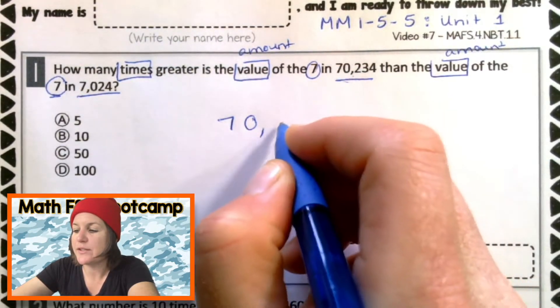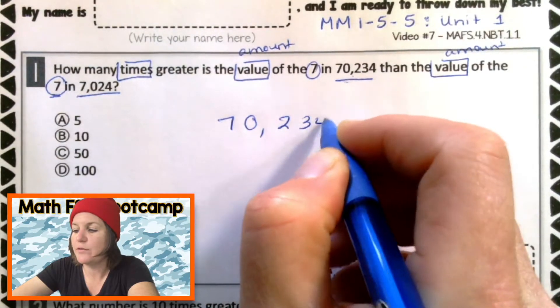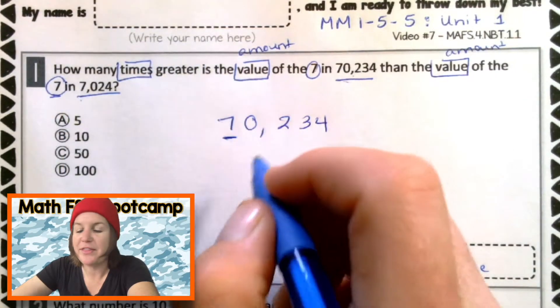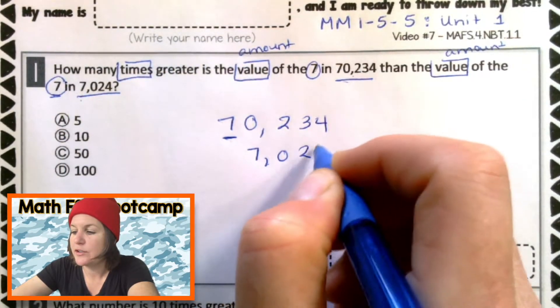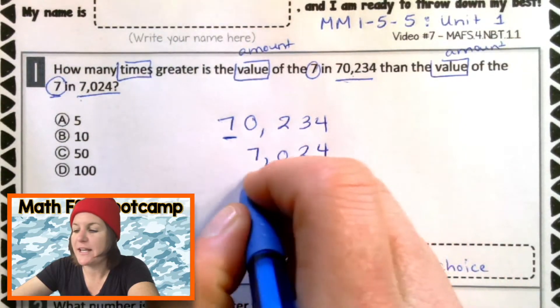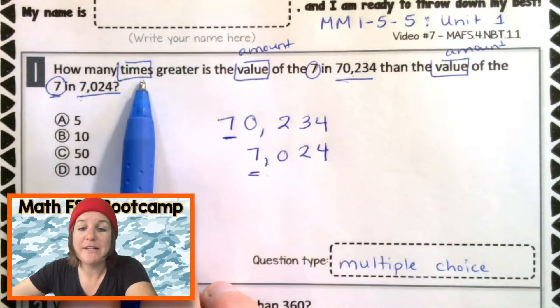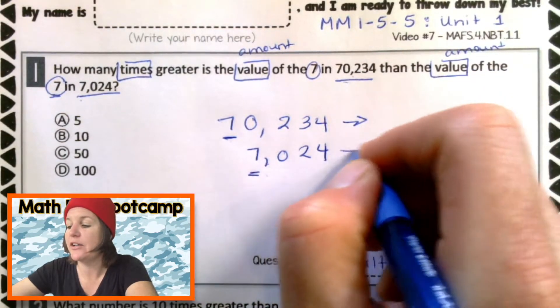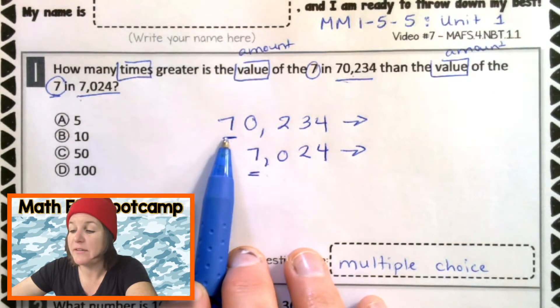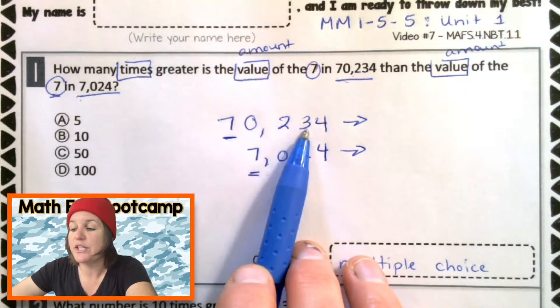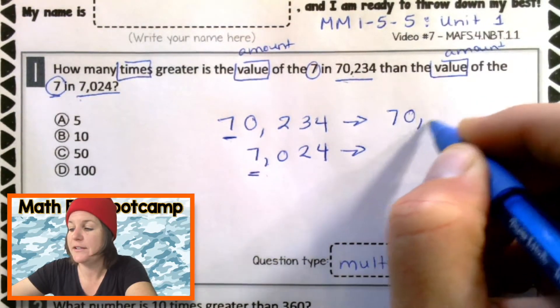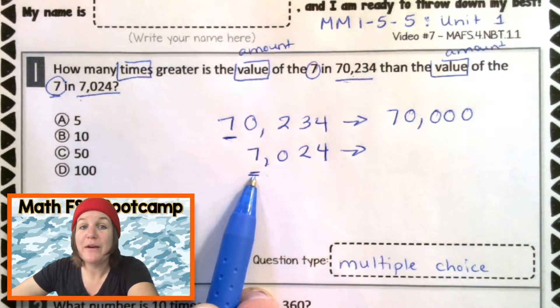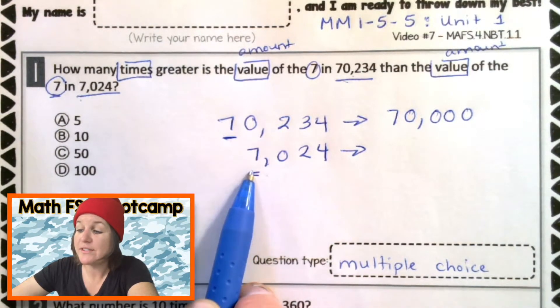And what I like to do for these is to go ahead and line up the two numbers that they're giving me. I've got 70,234 here, and here's my seven. And then I have the number 7,024. You see how it's nice and lined up? And here's my seven. So this question is asking, how many times greater is this seven than this seven? Let's go ahead and determine what the values are. The value of this seven would be 70,000. This seven has a value of 7,000.